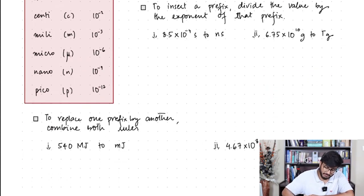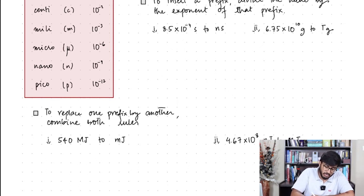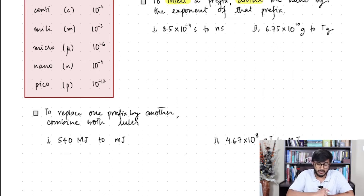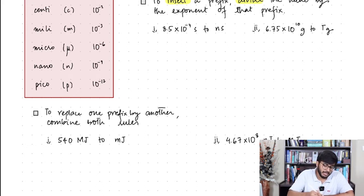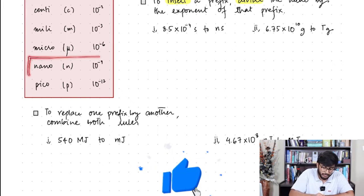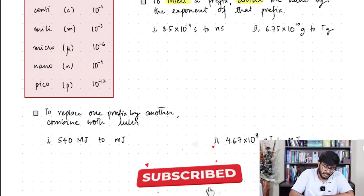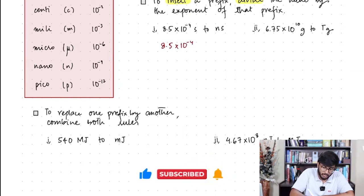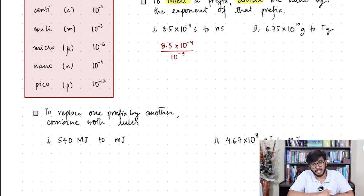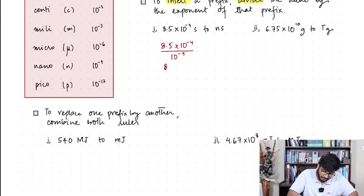But if you want to insert a prefix, you do the opposite — you divide by the exponent of that prefix. For example: 8.5×10⁻⁴ seconds, and I want to convert it into nanoseconds. Nano is 10⁻⁹, so I divide: 8.5×10⁻⁴ divided by 10⁻⁹. The value turns out to be 8.5×10⁵ nanoseconds.